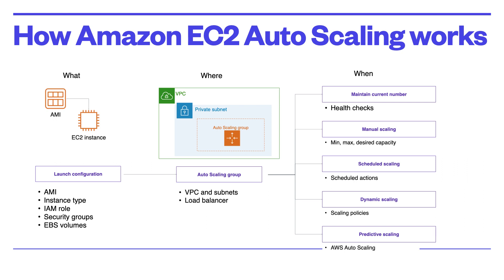You can also use an Amazon Auto Scaling Predictive Scaling Policy, which predicts demand based on your historical data. Using a machine learning model, it predicts expected traffic and triggers scaling — adding or terminating machines — based on those prediction models.